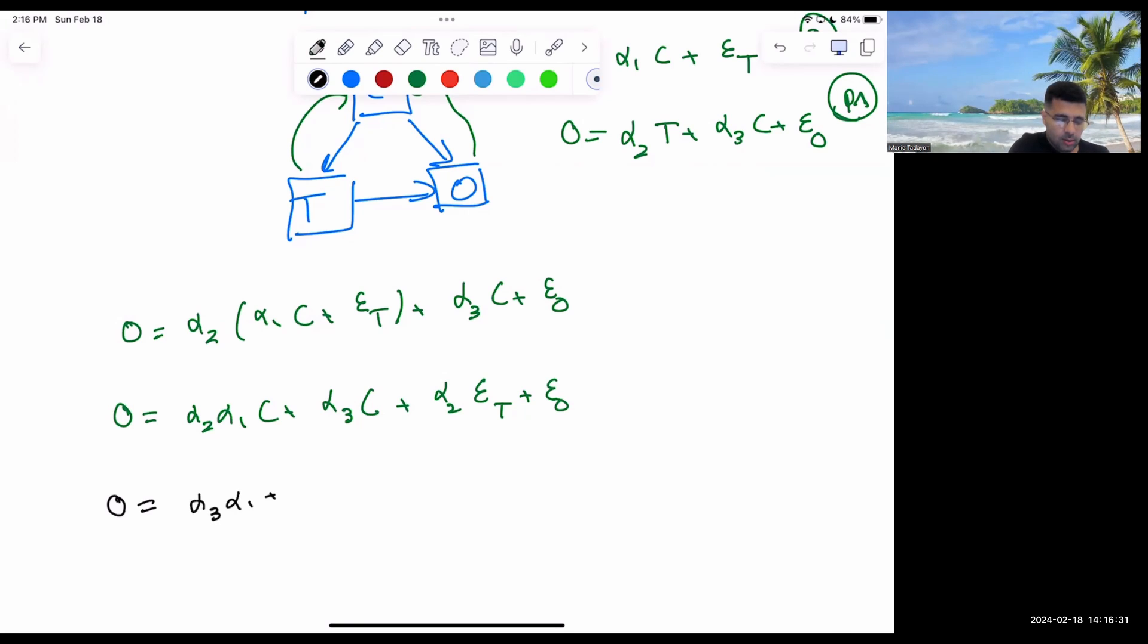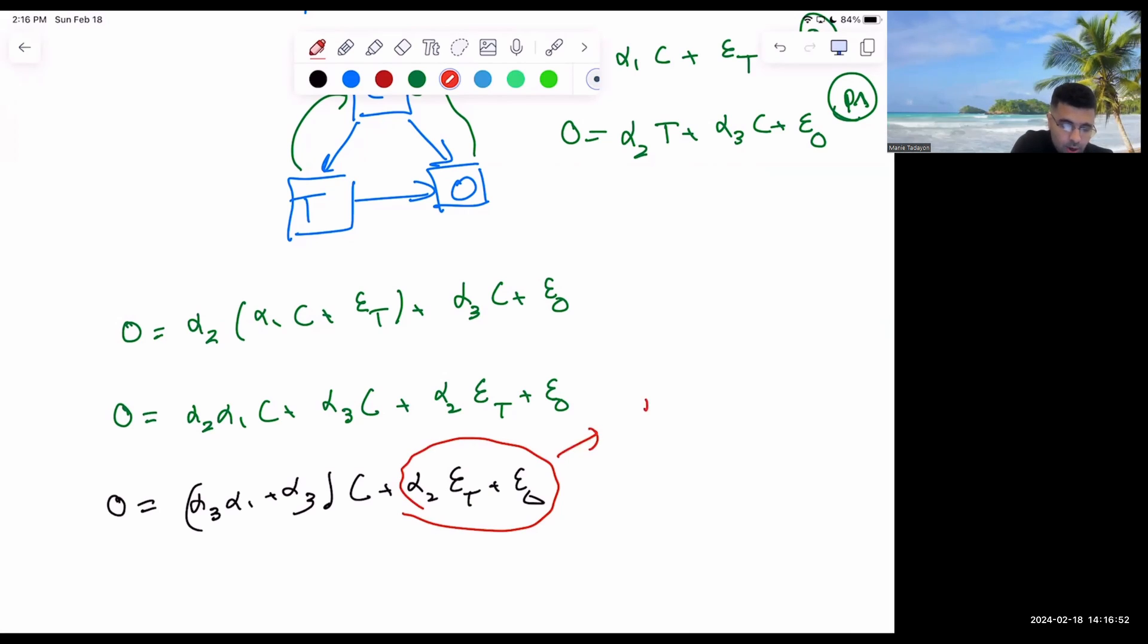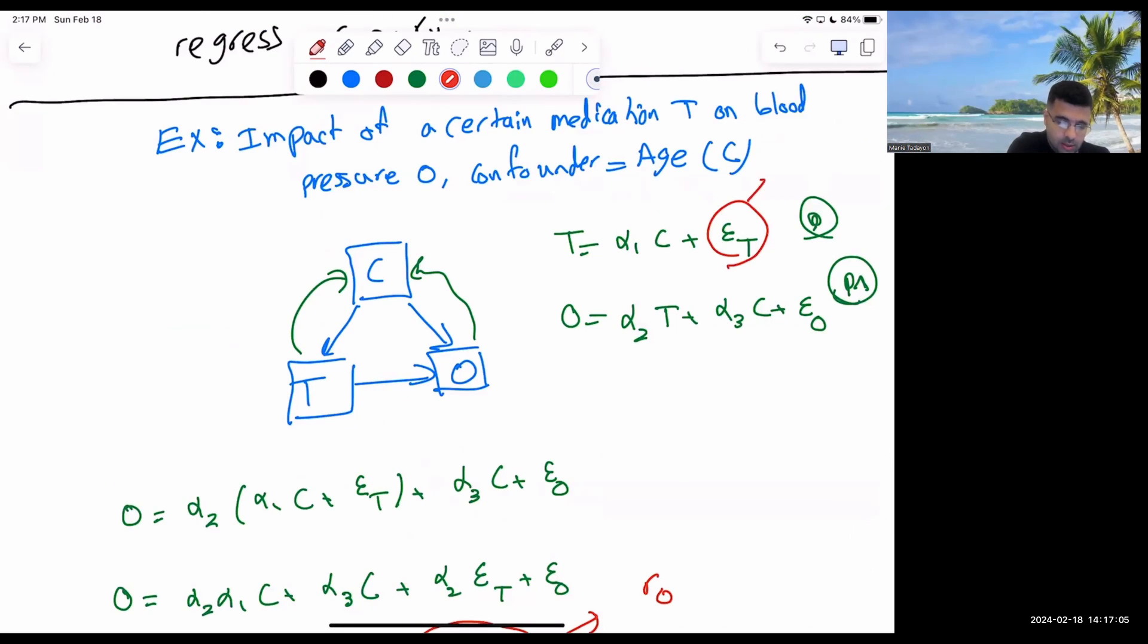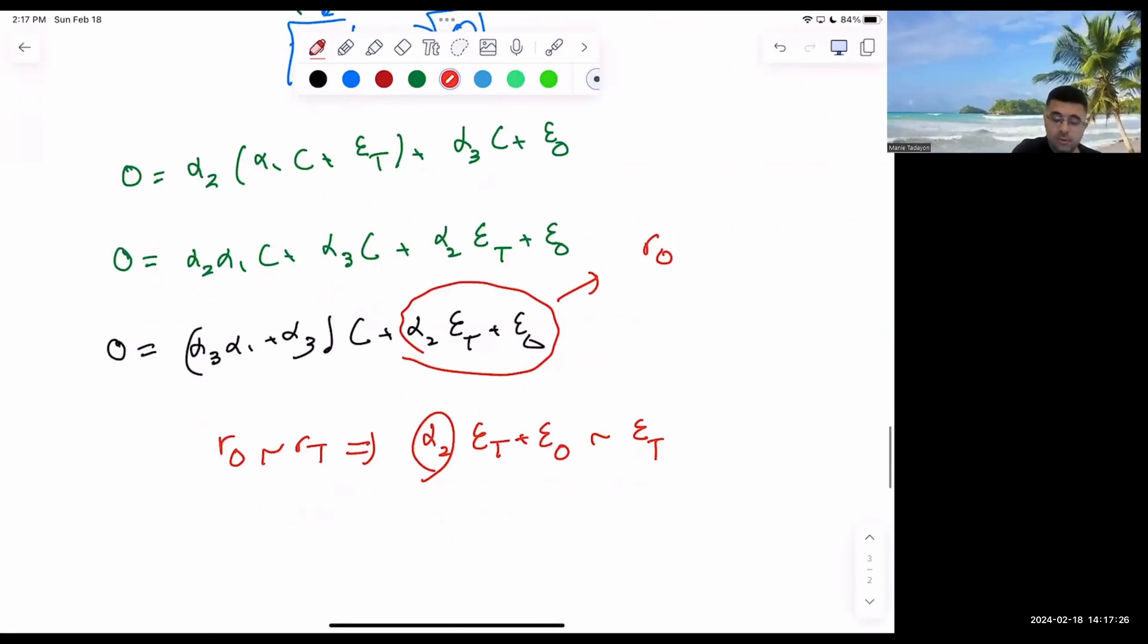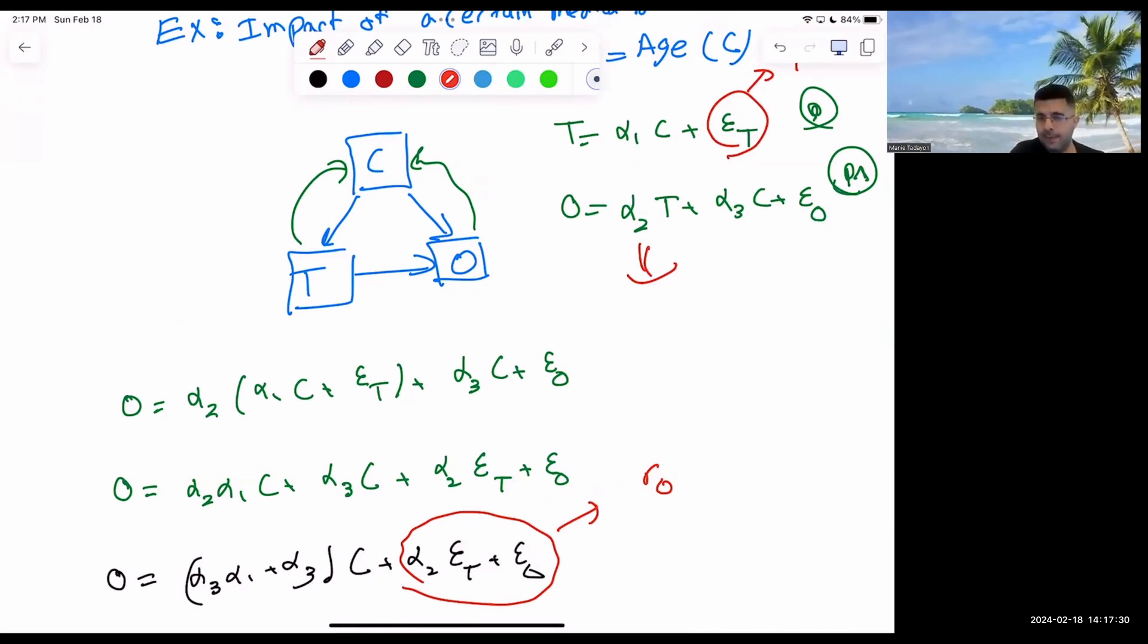O is equal to alpha 2, I get T from the star equation, alpha 1C plus epsilon T plus alpha 3C. So O is equal to alpha 2 epsilon T plus epsilon O. One more step. If you factor from C. When you're going to go ahead and regress O on C, what do you get as the error, as a residual? This is what you get as a residual. This is a residual. We call it RO residual, residual of outcome on C. What's the residual of treatment on C? This is RT. And if I do RO regress RT, what do I get? Alpha 2 ET. What's going to be the regression? If I do it based on this AT, it's going to be alpha 2. Isn't this what we want? We want alpha 2. So that's a simple proof to consider.